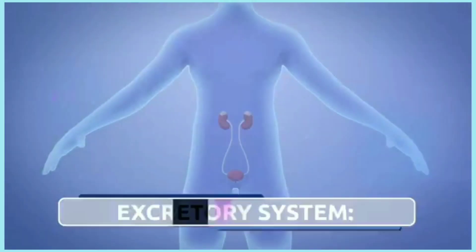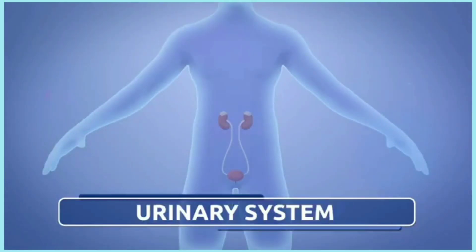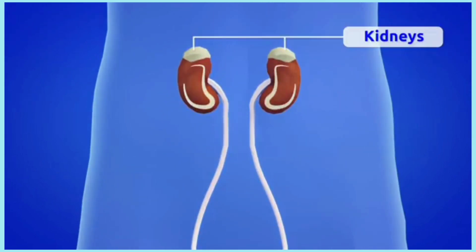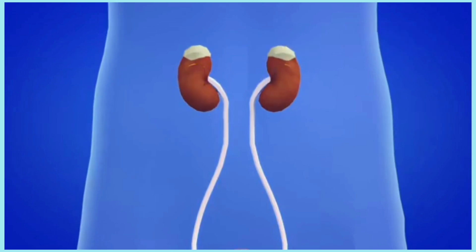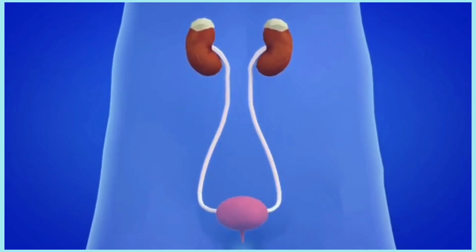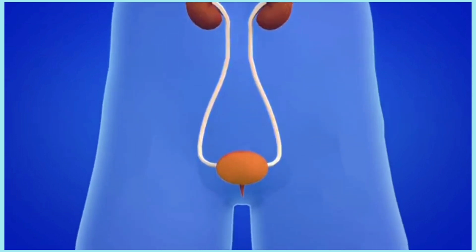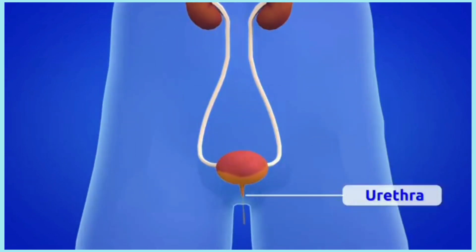The excretory system cleans the blood, producing urine with all the substances that your body does not need. When the filtration in the kidneys is finished, the urine goes on to the urinary tract, then from the ureter to the bladder. It accumulates here until you feel like going pee, then it exits through the urethra and is expelled outside the body.